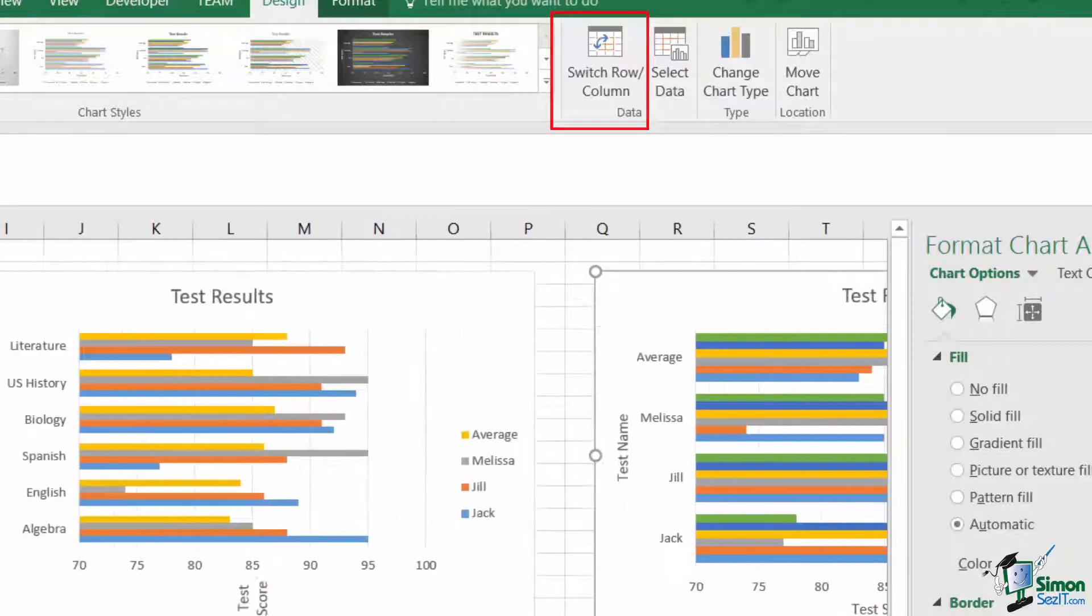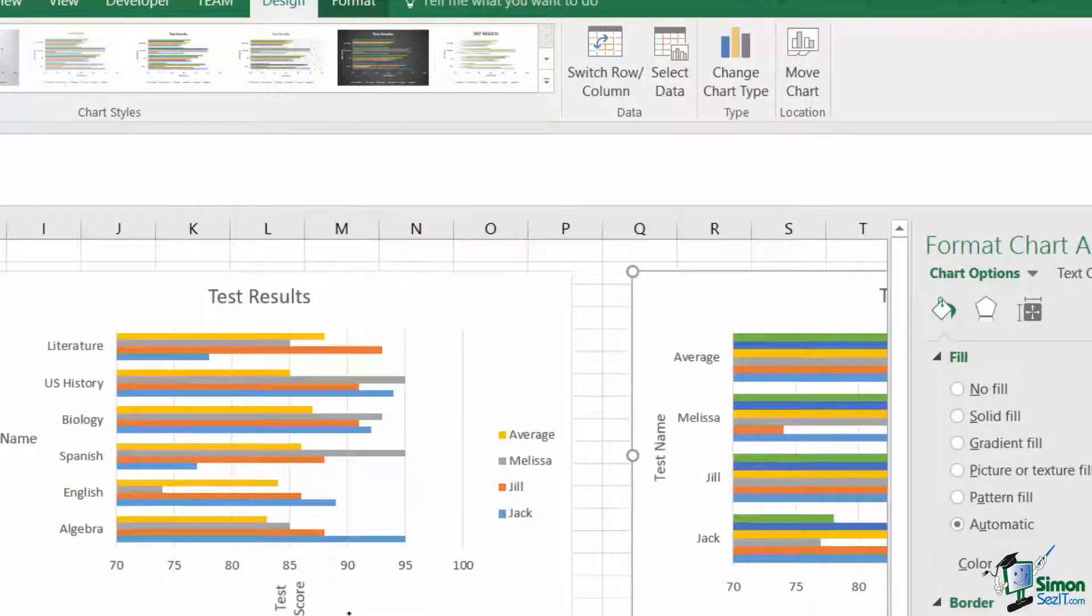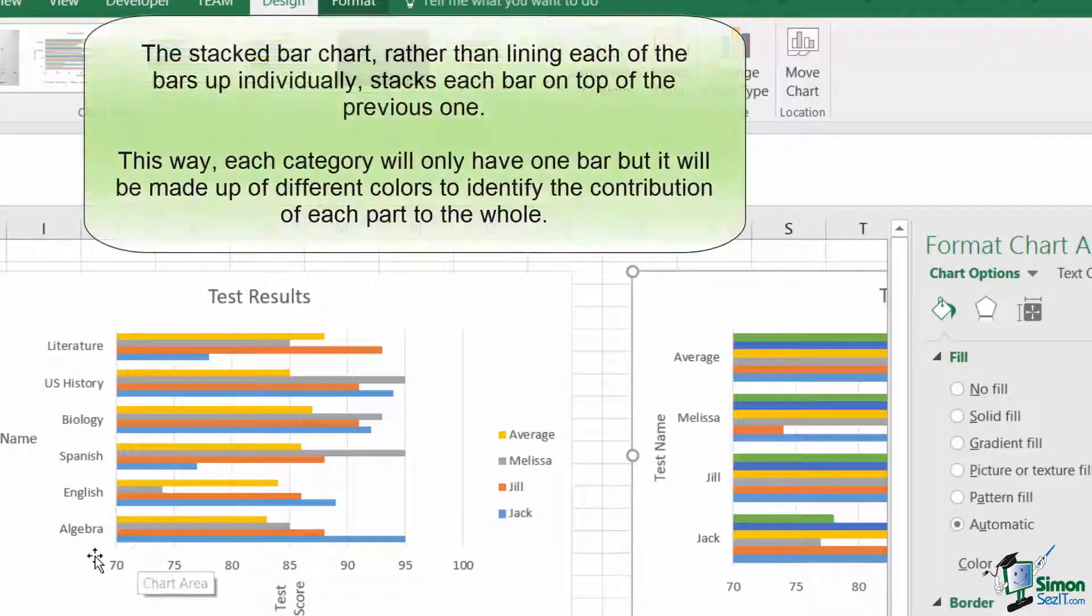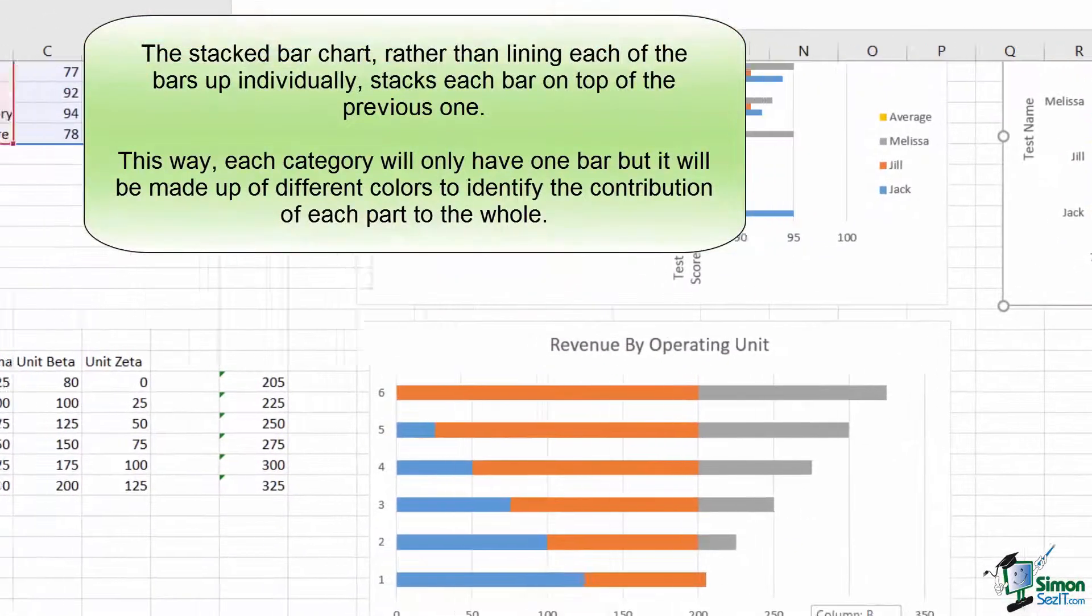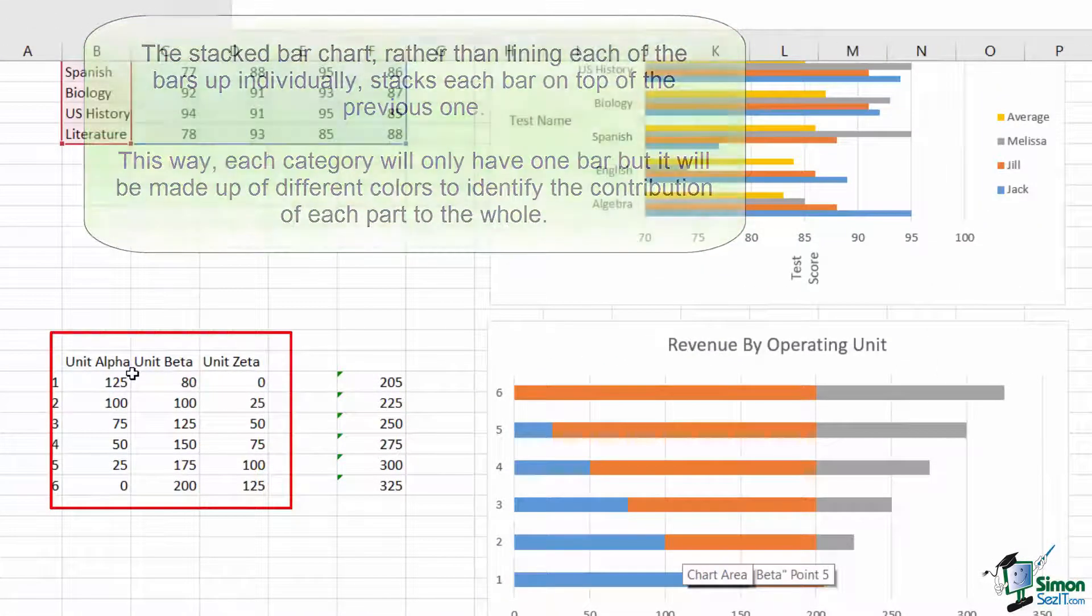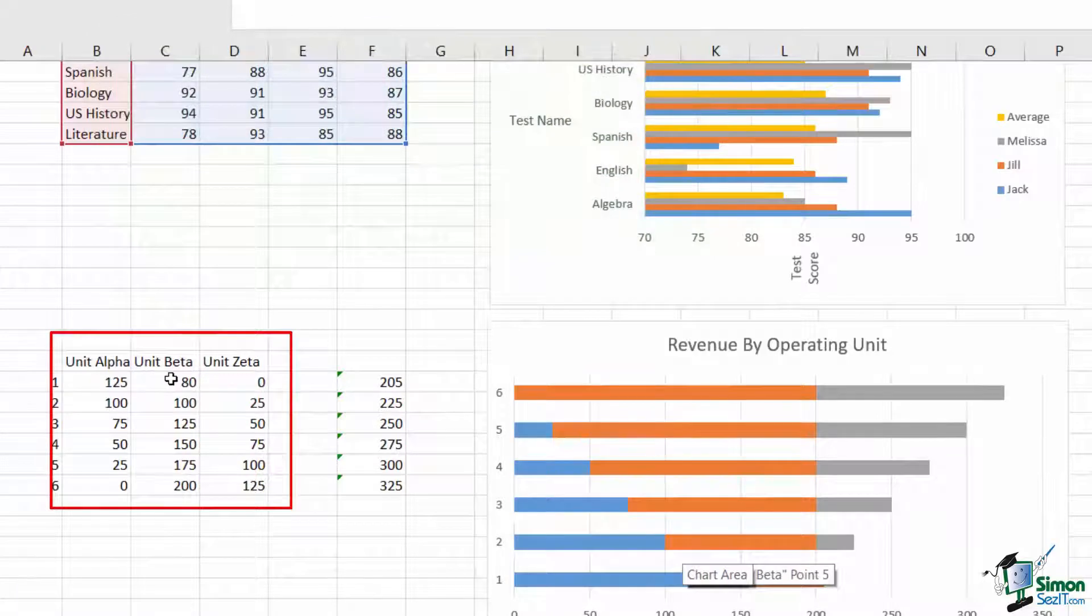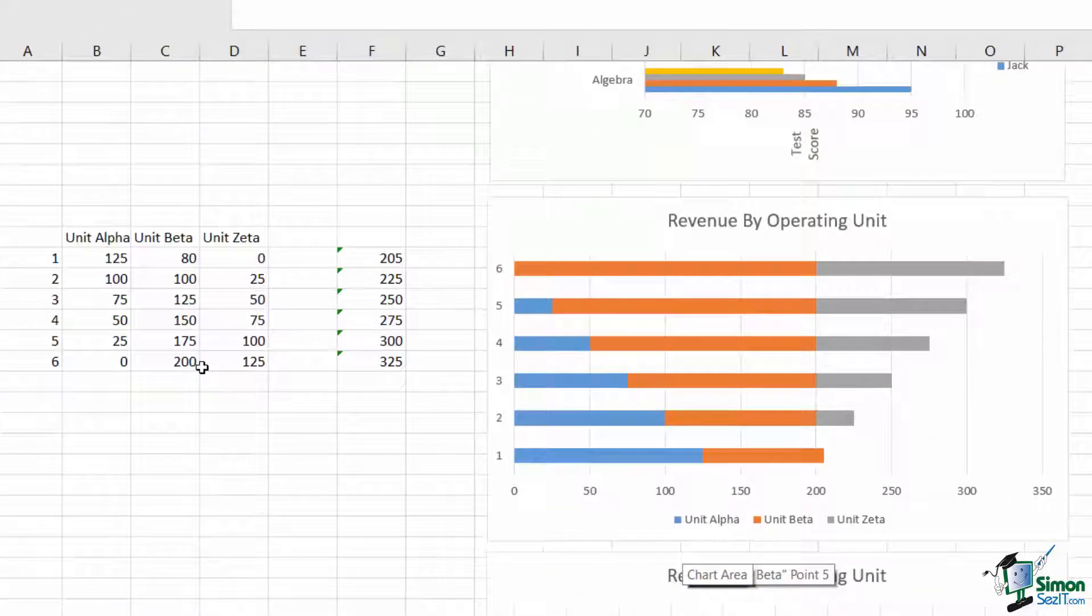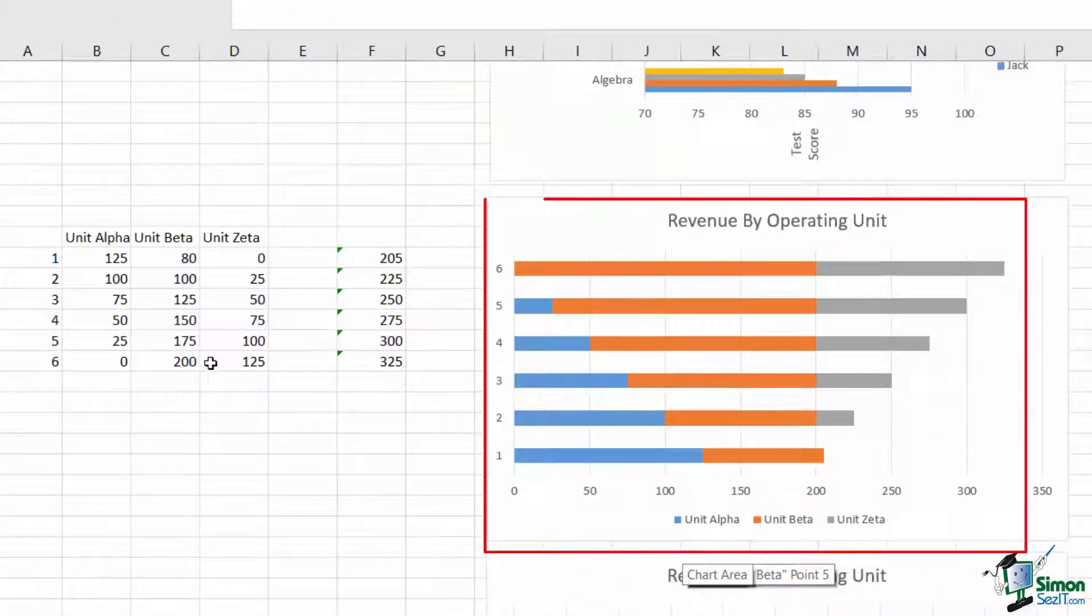The stacked bar chart takes each of the series components and adds them together to show how each contributes to a whole. Say that you're running a company with three different operating units—alpha, beta, and zeta—and you're looking at the total company revenue. It might be useful to see how these components break down over time to see how the business is shifting.